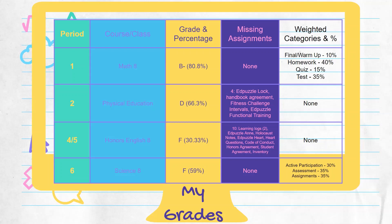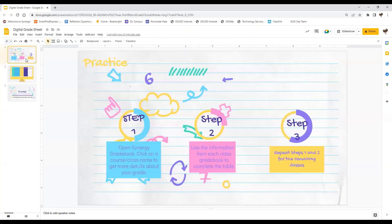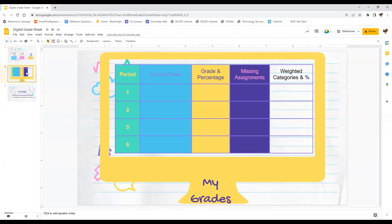It will be in Google Classroom like so. And it will have the steps to remind you. Step one, what you're supposed to do. Step two, information from each category and then repeat. You have the digital copy here.